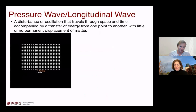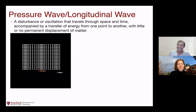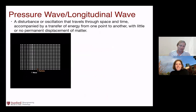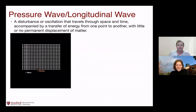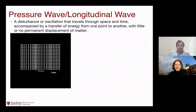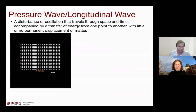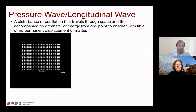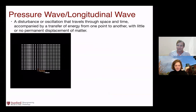A pressure wave or longitudinal wave is a disturbance or oscillation that travels through space and time. It's accompanied by a transfer of energy from one point to another with very little or no permanent displacement of matter. In this animation, you can see the individual particle doesn't move very much — it has a small velocity and small displacement — but the wave itself moves at a pretty large velocity over long distances.